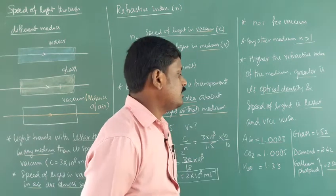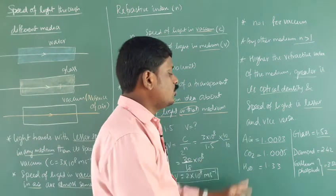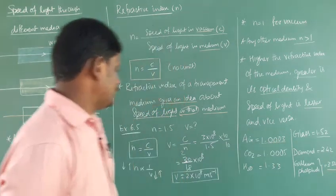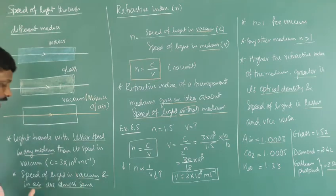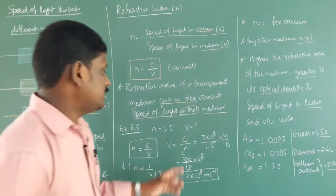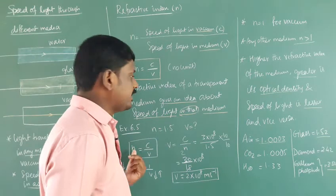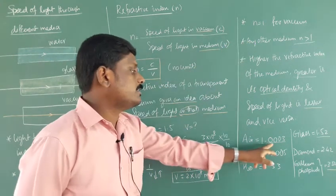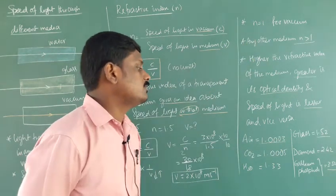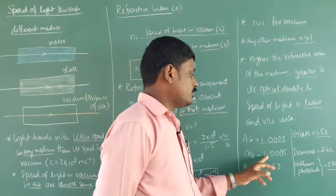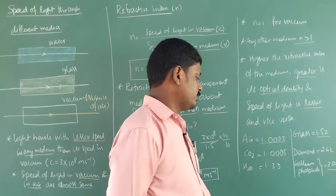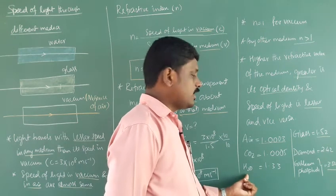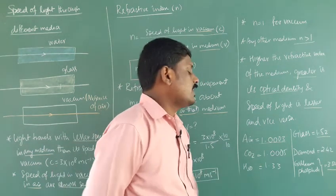Here are some refractive index values: vacuum is 1, air is 1.003 — which confirms that the speed of light in vacuum and air is almost the same. Carbon dioxide is 1.0005. For ice it is 1.31, and for water it is 1.33.